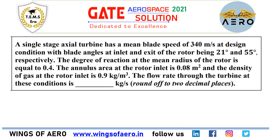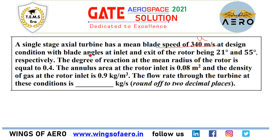First you need to identify the given data. U is given. They have set the blade angles — the blade angle at the inlet and at the exit of the rotor. That means beta or alpha is given. The value given is beta. So beta 2 is given and beta 3 value is also given.